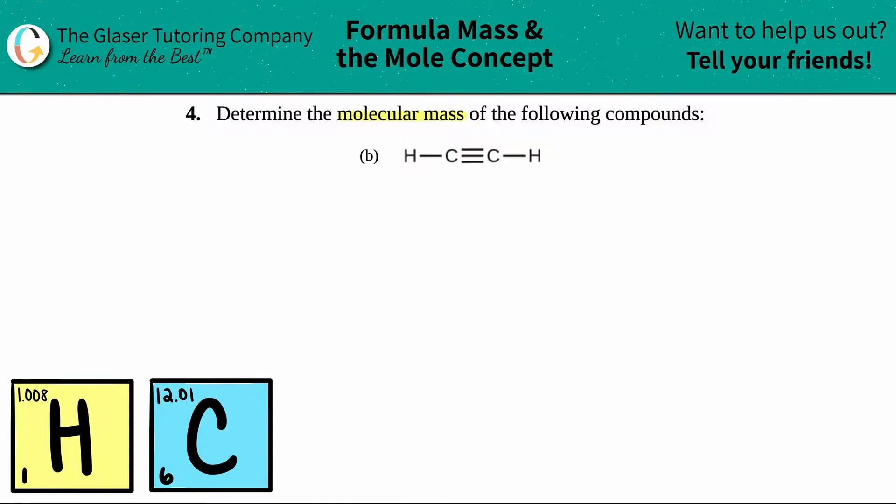So in organic chemistry, this compound is known as acetylene. You don't have to know that, but just know that I see only two types of elements here. I see that I have H's on the outside and I have C's on the inside. And remember, H is hydrogen, and C is carbon.